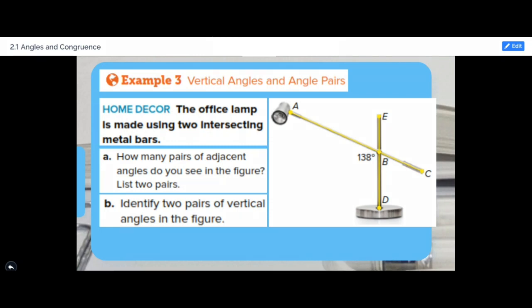We can say that angle EBC and EBA are two adjacent angles. Also, angle ABD and DBC are two adjacent angles as well.